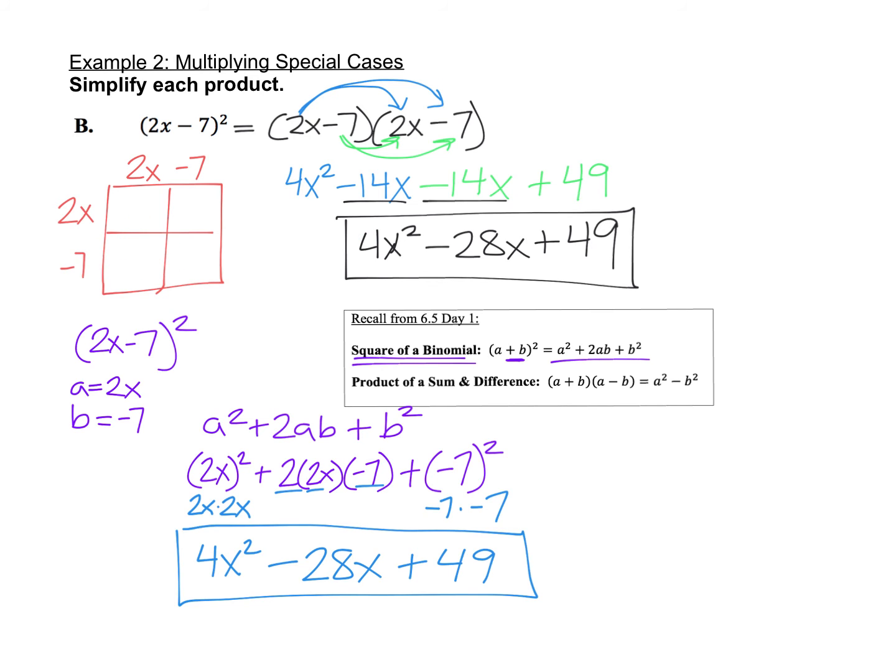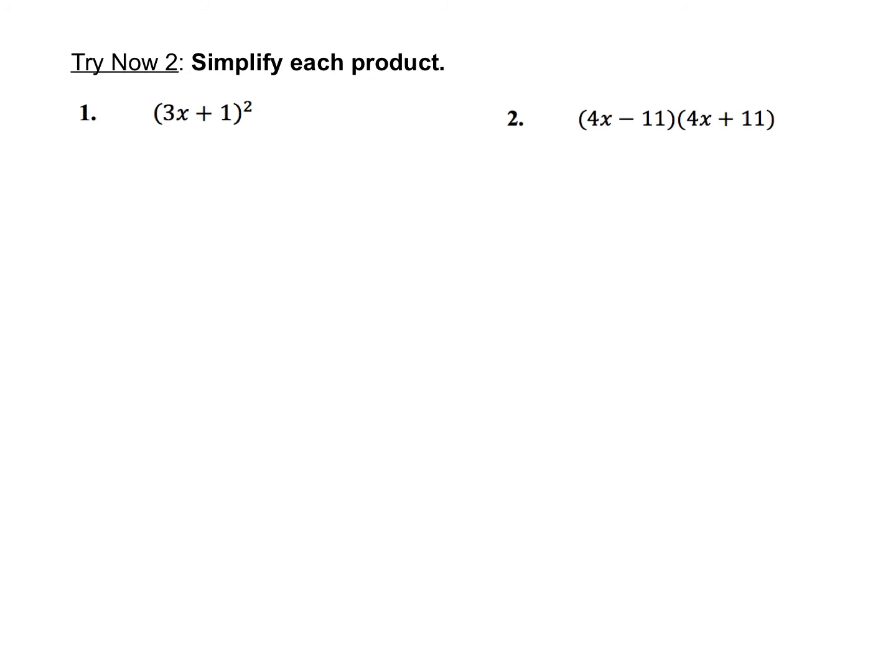Here's a quick try-now problem for you to try on your own. You can use any of the methods: the shortcut formulas for square of a binomial or product of a sum and a difference, the FOIL method, or the box method. You just pick the method that makes the most sense to you. Please pause your video now and give this problem a try.